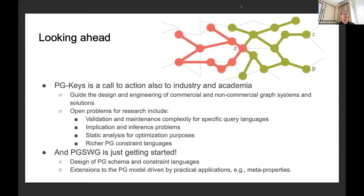Richer property graph constraint languages and beyond keys and much more. The schema working group is just getting started. We're continuing the work of designing schema and constraint languages, and also looking at extensions to the property graph model driven by practical applications. For example, properties on properties. There's lots of interesting work. Thanks.